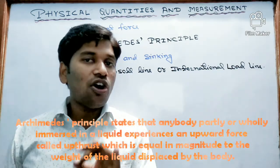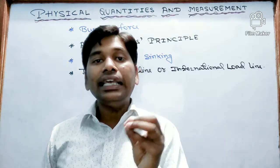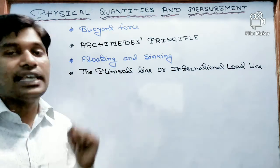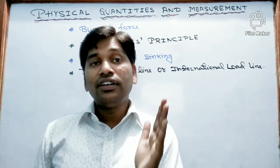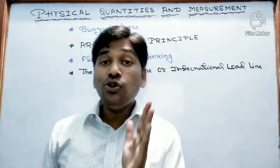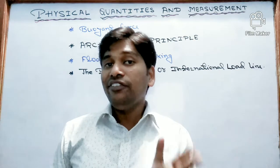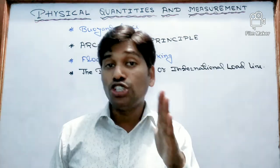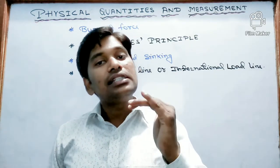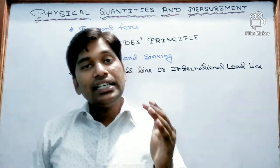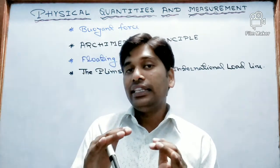On the basis of density, we can know which body will float or which body will sink in a liquid. For a body to float in a fluid, the density of the floating object should be less than or equal to the density of the fluid in which it is to float. If the density of the body is more than the density of the fluid, it will sink. For example, a cork — whose density is less than water — floats on the surface of water. And an iron nail — whose density is more than the density of water — sinks in water.